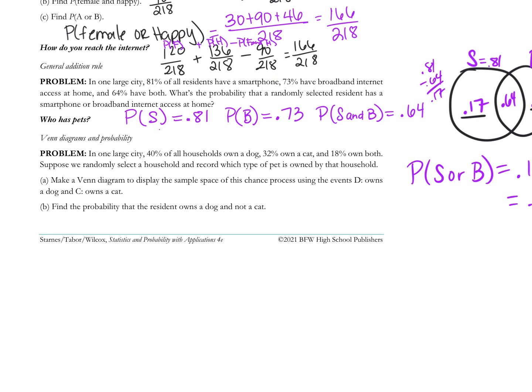In one large city, 40% own a dog. So let's say the probability of a dog is 0.4. And 32% own a cat, 0.32, probability of a cat. And the probability of a dog and a cat is 18%, 0.18. So make the Venn diagram. And then find the probability that a resident owns a dog and not a cat. Probability of a dog and cat complement. Not a cat. No cat, but only a dog.